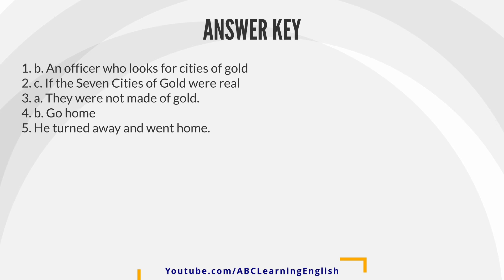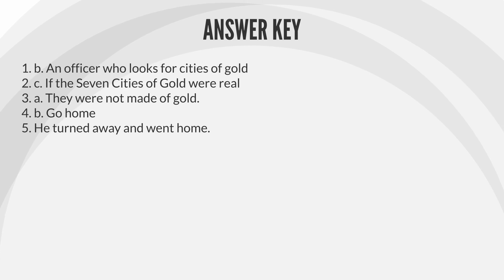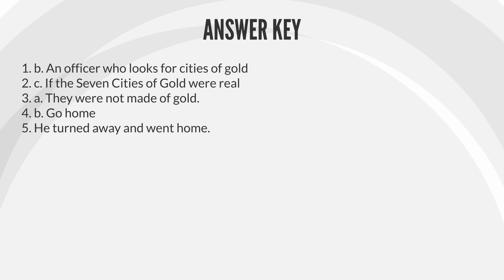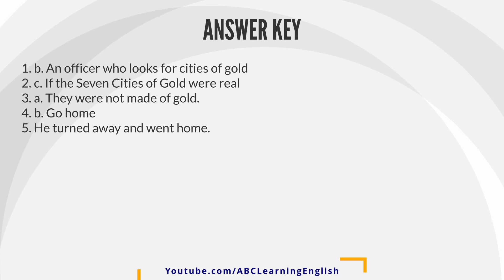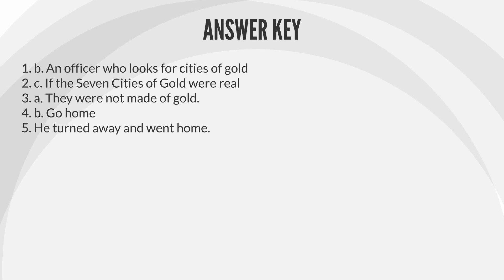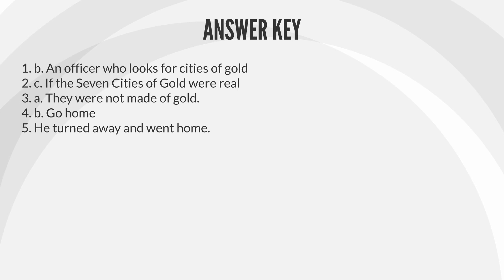Answer key: 1. B. An officer who looks for cities of gold. 2. C. If the Seven Cities of Gold were real. 3. A. They were not made of gold. 4. B. Go home. 5. He turned away and went home.